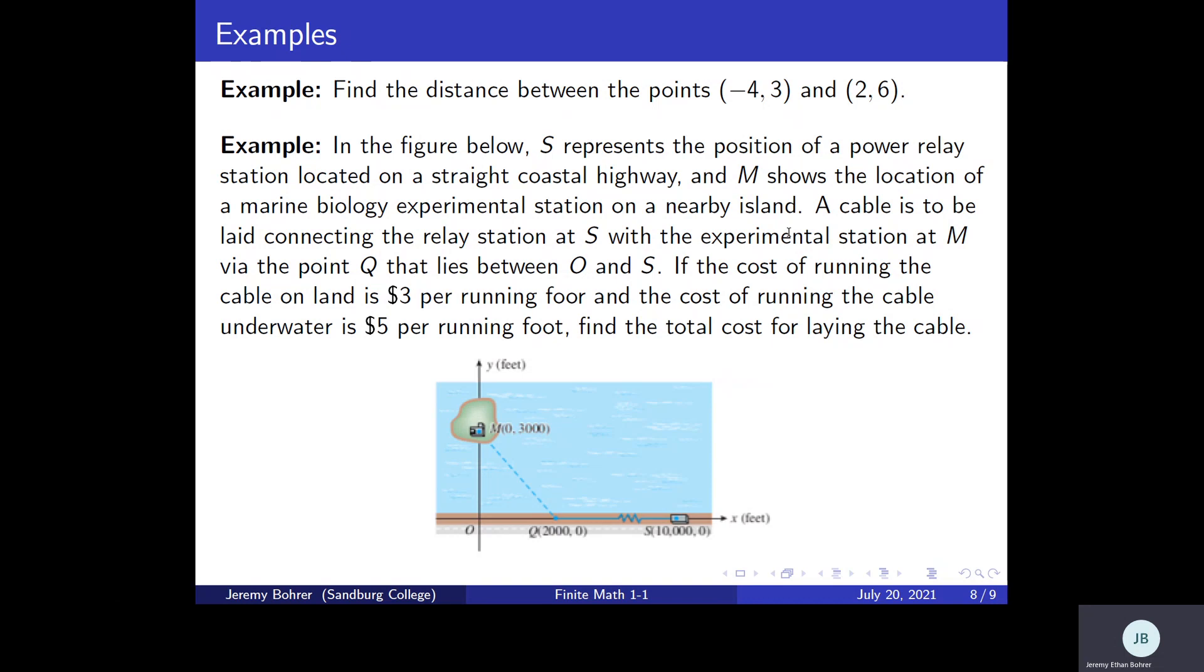So we have some points here. We've got O, which is the origin, so we know that's the point (0, 0). Q is the point (2000, 0), S is the point (10000, 0), and M is the point (0, 3000). I'm going to duplicate this image in Notepad so that you can see that, and then we will go from there.